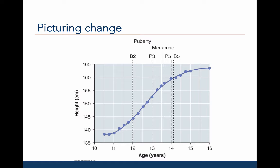For example, B2 and B5 represent different phases of breast development. P3 to P5 represents another aspect of pubertal development, namely the development of pubic hair. These two indicators, along with menstruation or menarche, are defining features of female pubertal development. What we see here is that there is a steep change in height between these different stages of pubertal development. After P5 and B5, when puberty is considered complete, the growth in height levels off.